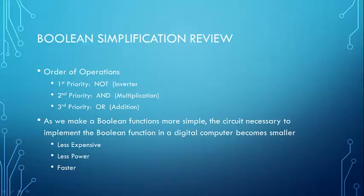Also remember that for Boolean simplification, NOT — our inverter — has first priority, second priority is AND (multiplication), and third priority is OR. But just like in mathematics, parentheses and grouping symbols have to be addressed first. That's why we have our NAND and NOR gate simplification laws — so we can get rid of that inversion bar over the entire product for a NAND or over the entire sum for a NOR, allowing us to further simplify our expressions. As Boolean functions become simpler, the circuit becomes smaller, less expensive, consumes less power, and operates faster.